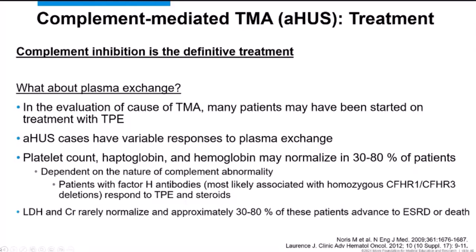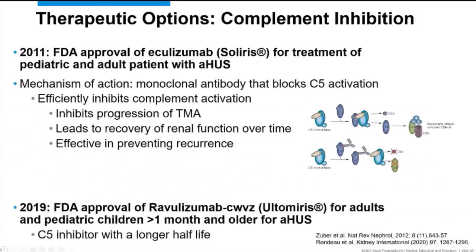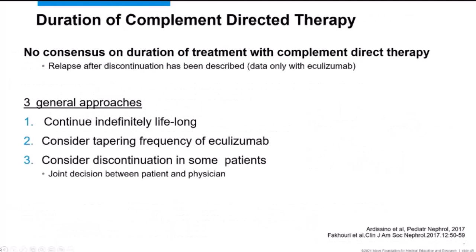The two available complement inhibitors are eculizumab, a C5 inhibitor (the first approved), and ravulizumab, approved in 2019, also a C5 inhibitor but with a longer half-life. Both inhibit progression of TMA, lead to renal recovery over time, and are effective in preventing recurrence. A major ongoing discussion is how long to continue C5 inhibitor therapy, as there is no consensus and relapses occur after discontinuation.